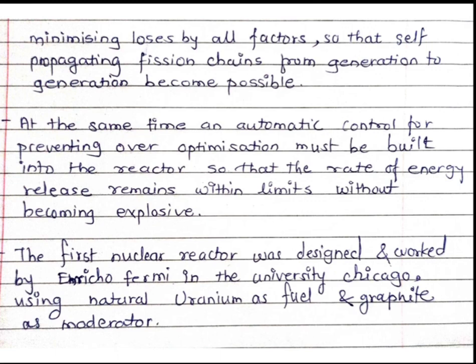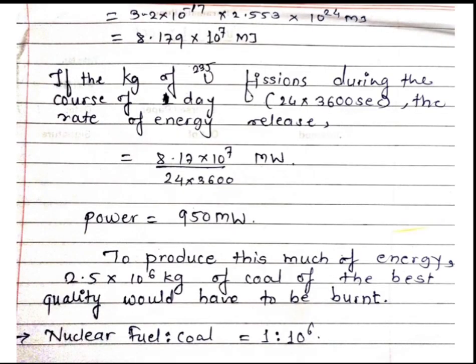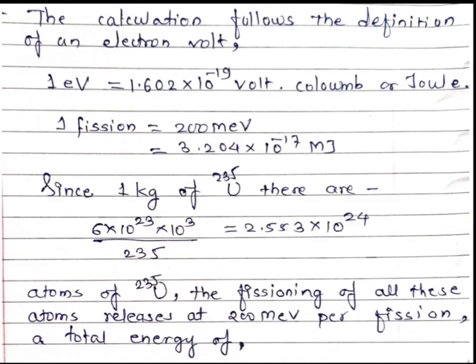Enrico Fermi, the scientist, prepared the first nuclear reactor at the University of Chicago, using natural uranium as fuel and graphite as the moderator for converting fast neutrons into slow neutrons. This concludes our discussion on the natural uranium reactor and fission energy.